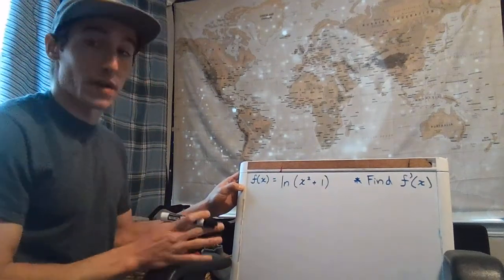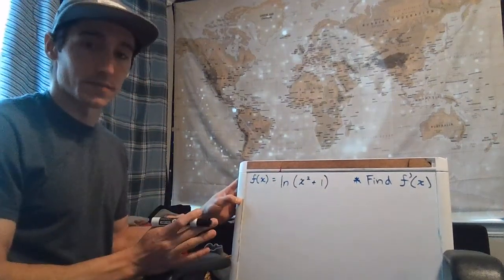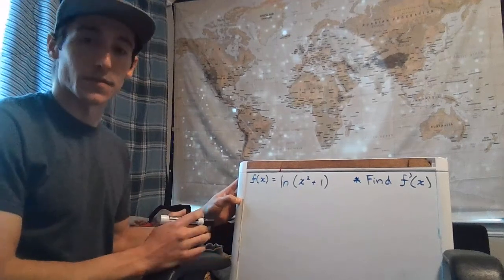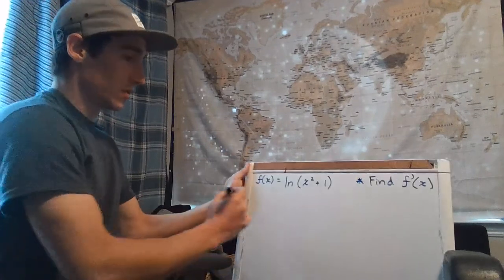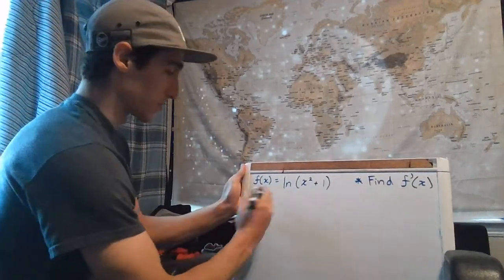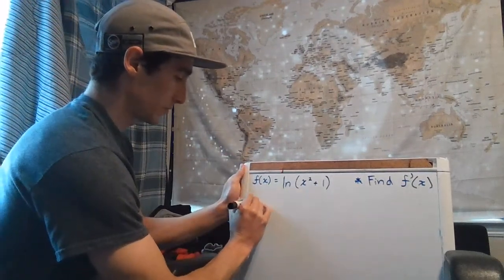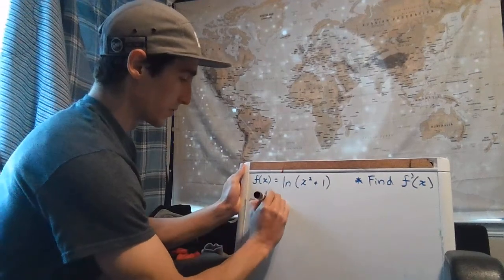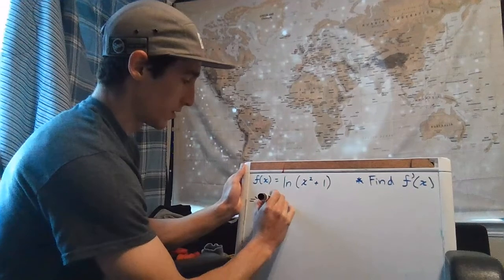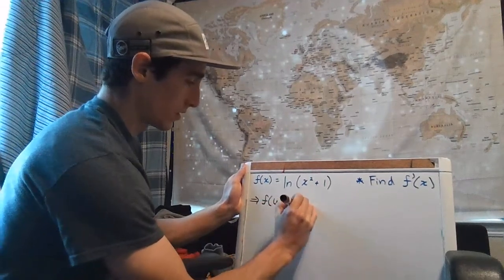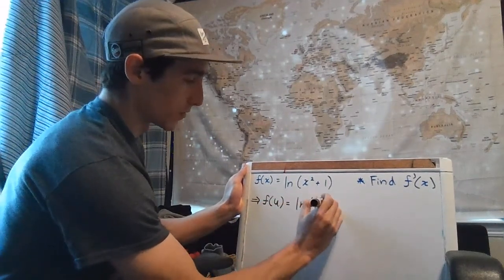If you haven't seen it, you're going to see it now. There's a special way to take the derivative of natural log functions—it's a special form of the chain rule. Whenever we have a natural log function, say we're dealing with natural log of u.